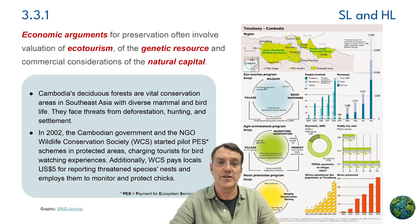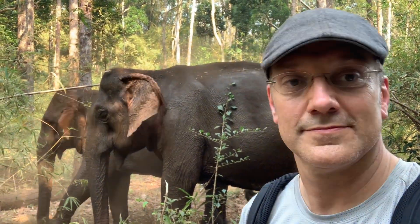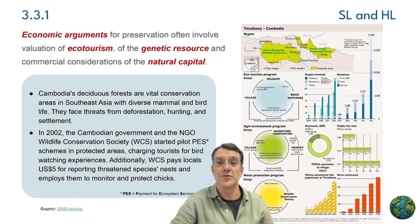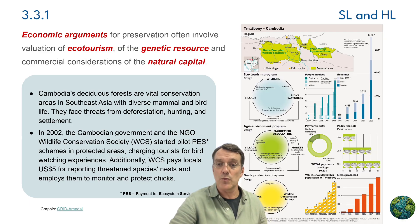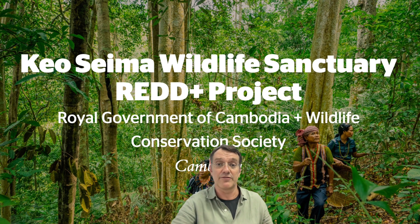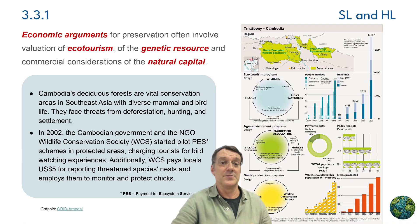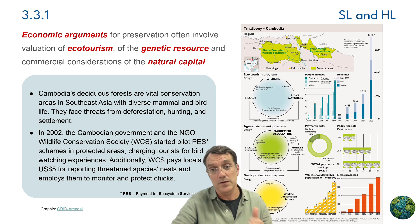Here's a concrete example of economic justification for conservation from Cambodia. Cambodia's deciduous forests are vital conservation areas in Southeast Asia, with diverse mammal and bird life, but they face threats from deforestation, hunting, and settlement. In 2002, the Cambodian government partnered with a wildlife conservation society to implement payment for ecosystem services (PES) schemes. These programs charge tourists for birdwatching experiences and pay locals for reporting and protecting threatened species nests. Some communities also participate in the UN REDD+ program, receiving financial payments to protect forests. Keeping the forest intact not only provides habitat for biodiversity, it also sequesters carbon to mitigate climate change. These PES schemes create economic incentives for conservation while supporting local communities.